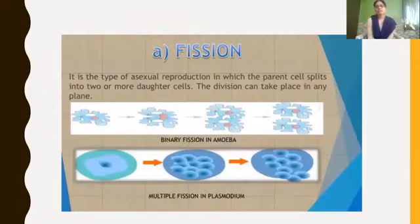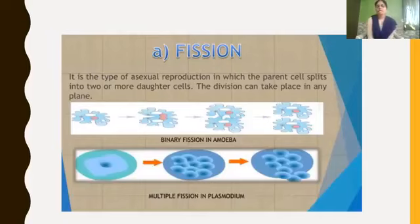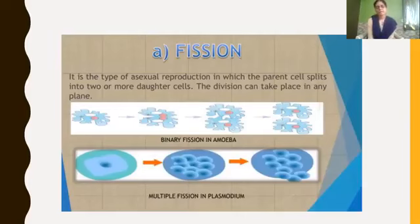The first type is fission. It is a type of asexual reproduction in which the parent cell splits into two or more daughter cells. This division can take place in any plane — longitudinal or horizontal. The example we are going to learn in animals is amoeba, where binary fission takes place. This we will be learning in a detailed manner.